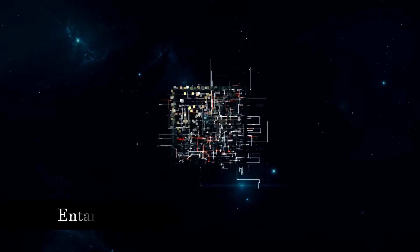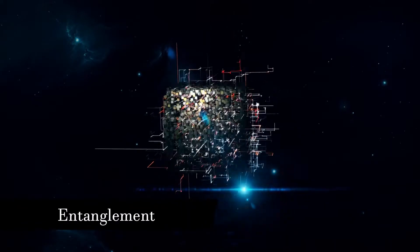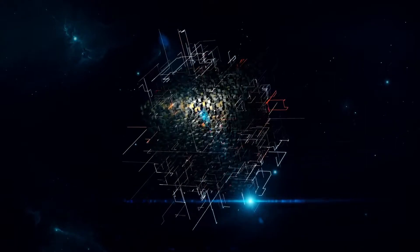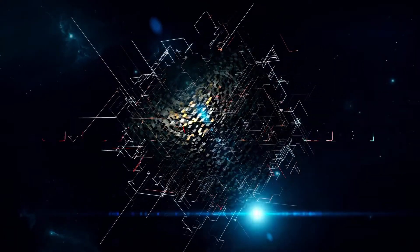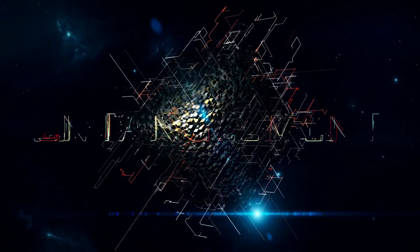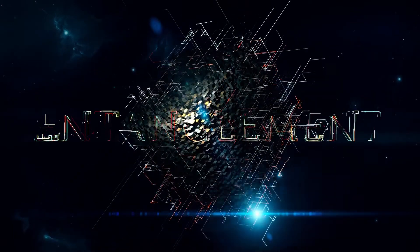Next up is entanglement. So let's look at the coin example again, but with two coins. When you spin them and measure, if one of the coins is a heads, the other entangled coin will also be a heads.